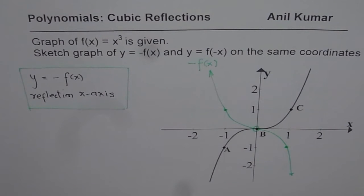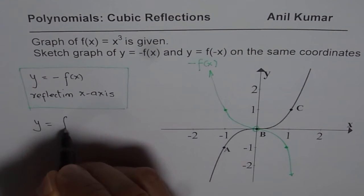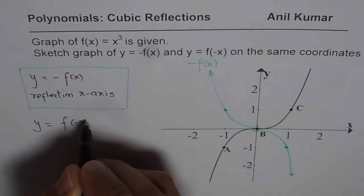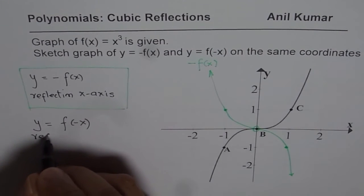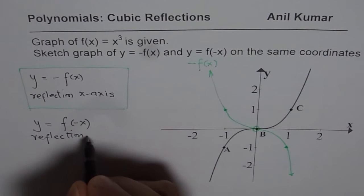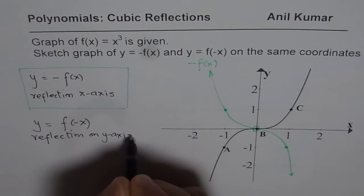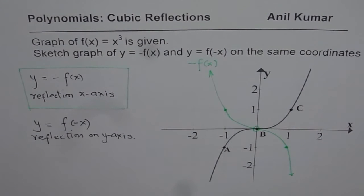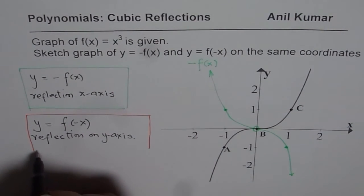Let us now sketch the graph for y = f(-x). Now, this means it is a reflection on, it is horizontally reflected, right? It is a reflection on y-axis. Now, let us reflect the graph on y-axis and see the result. So I will do this with orange color.